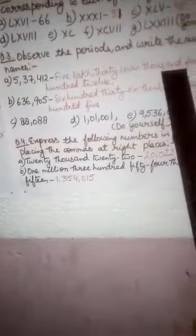So, to write the number name, we can go to look like this. This 2 is ones, tens, hundreds, thousands, ten thousands and lakhs. So, 5 is at lakhs place, 5 lakhs. 37 is at thousands. So, 37,000. And this is 412.